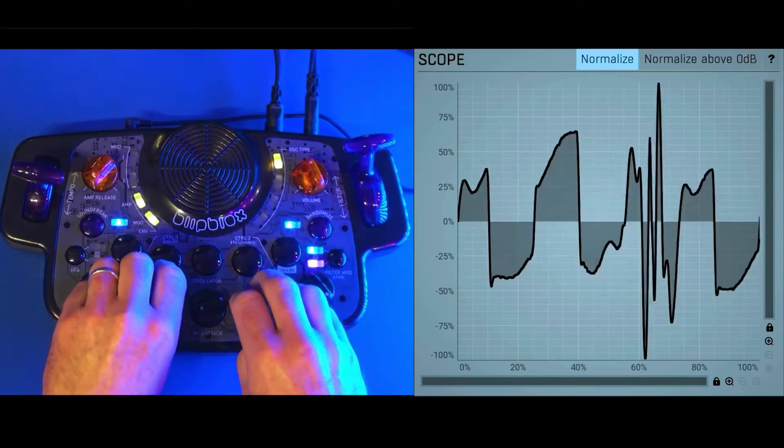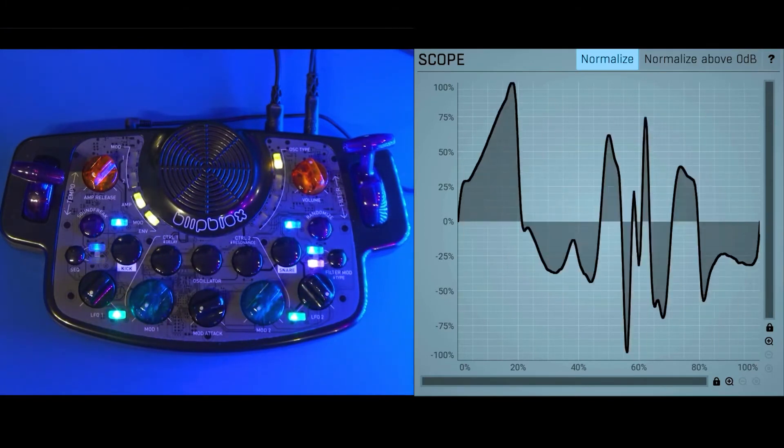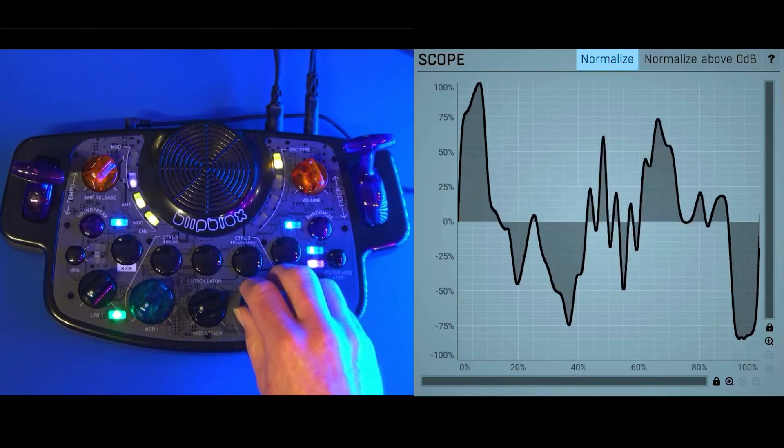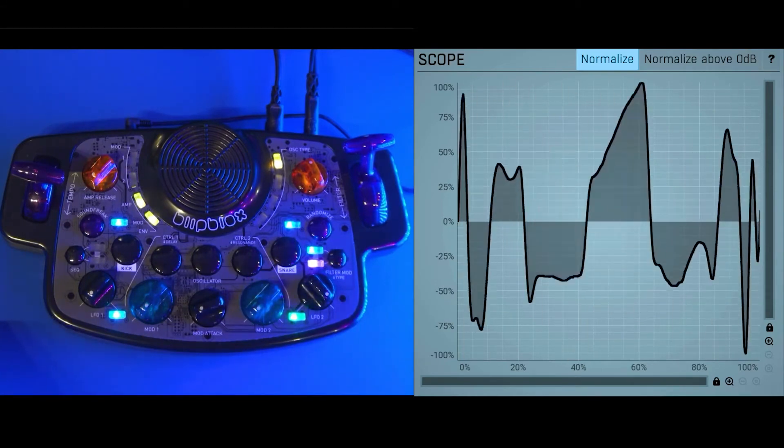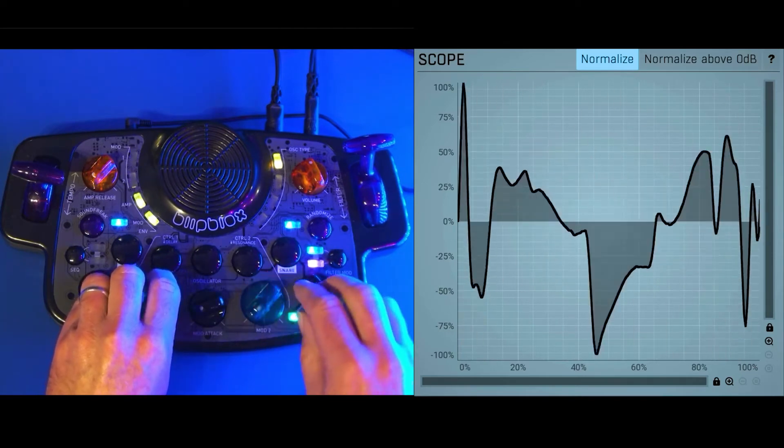So now, with the yellow oscillators here, these are our wavetable synthesis waveforms. So these actually use, inside of the memory of the Blip Blocks, we actually have custom waveforms that we've drawn out.